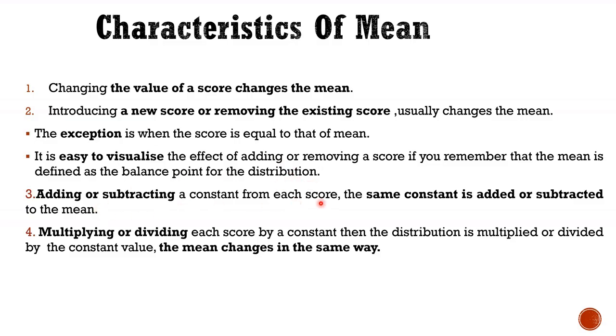Adding or subtracting a constant from each score, the same constant is added or subtracted to the mean. Multiplying or dividing each score by a constant, the mean changes in the same way.